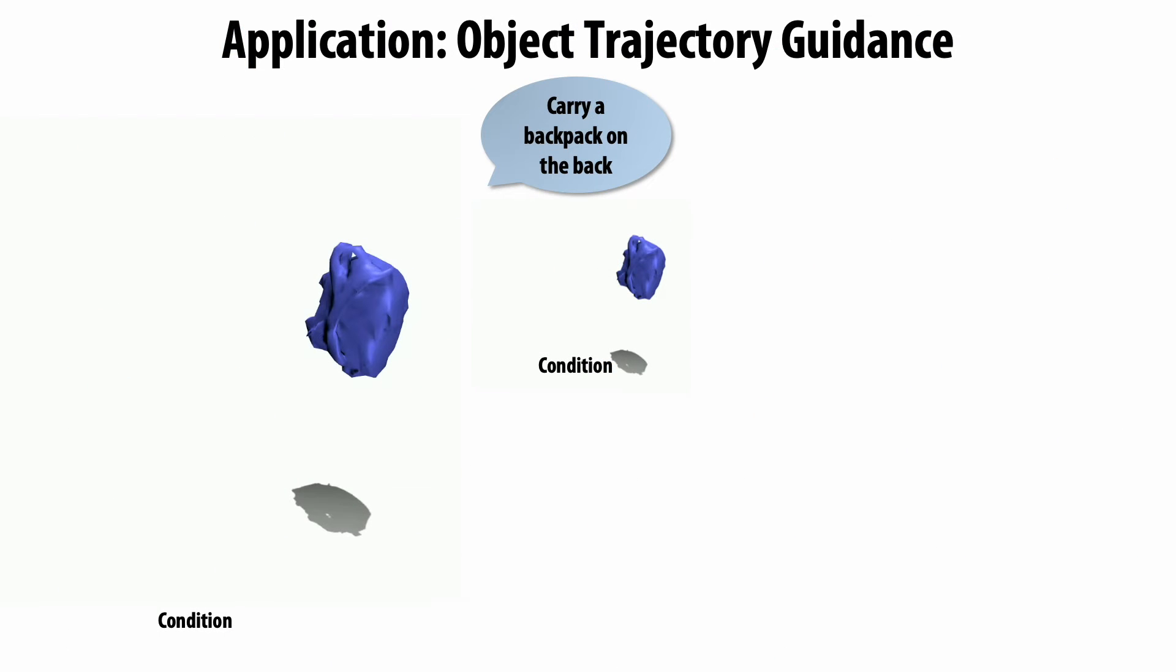We can also generate human motion from a given object trajectory without retraining, as we learn a strong model of human-object interdependency.